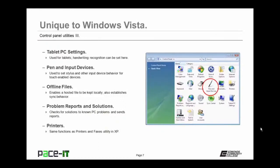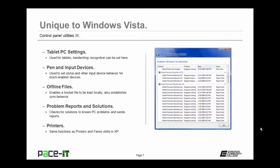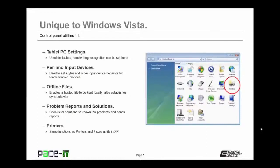Now let's move on to utilities unique to Windows Vista. The Tablet PC Settings utility is used for tablets where handwriting recognition can be set. The Pen and Input Devices utility sets stylus and other input device behavior for touch-enabled devices. Windows Vista added Offline Files capability — the Offline Files utility enables a hosted file to be kept locally and establishes synchronization behavior for when it goes back online. The Problem Reports and Solutions utility checks for solutions to known PC problems and sends reports to Microsoft. Instead of Printers and Faxes, Windows Vista has a Printers utility with the same functionality.